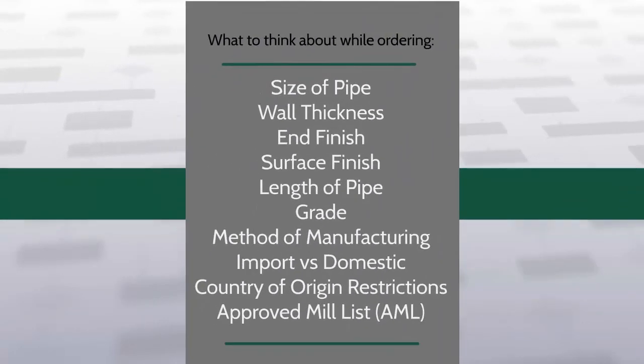Now that we have successfully covered how pipe is defined, the processing capabilities offered by Kelly Pipe, and reviewed the governing bodies that ensure quality control, the last thing to summarize is what to think about while you are placing an order. Consider: pipe size, wall thickness, end finish, surface finish, length of pipe, grade, method of manufacturing, import versus domestic, country of origin restrictions, and approved mill list.